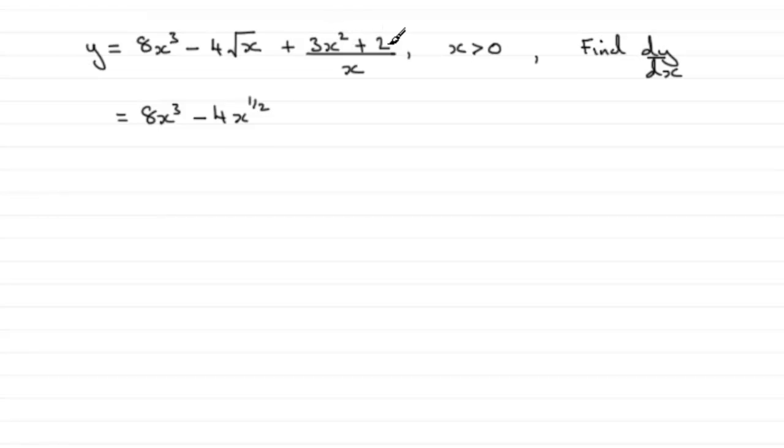Now, for this term here, certainly don't make the mistake of differentiating the top and dividing it by the differential at the bottom. You can't do that. What we can do is think of this as plus 3x squared divided by the x, because this is a single term here, plus 2 divided by the x.